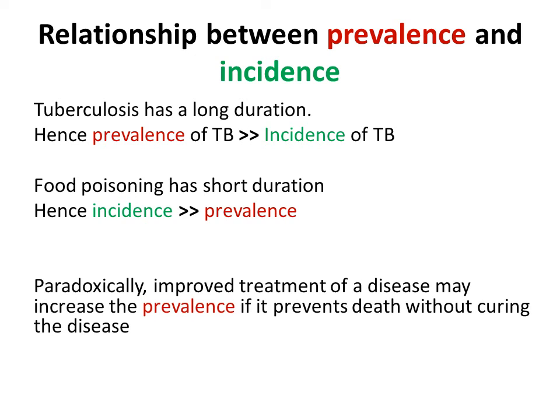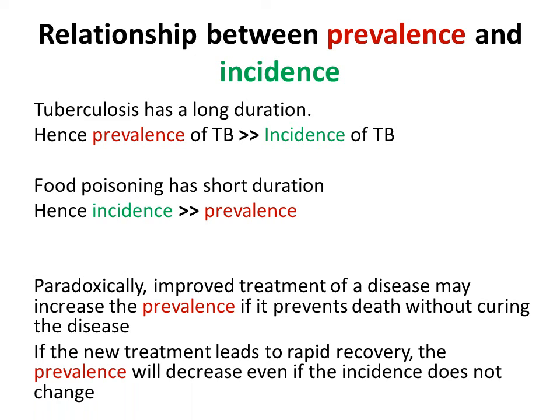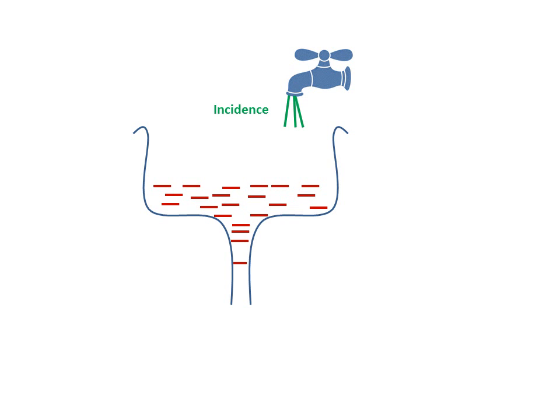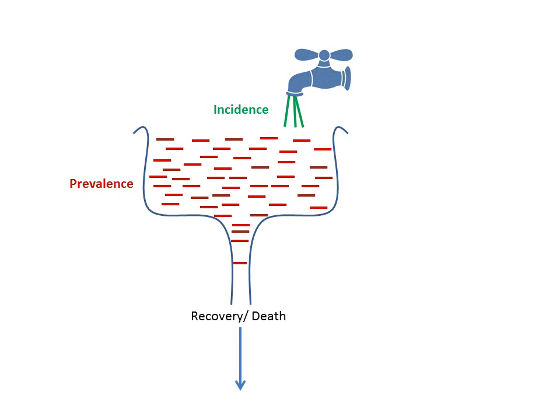If an improvement in treatment prevents death but does not cure the disease, it will paradoxically increase prevalence. But if new treatment leads to rapid recovery, prevalence will decrease even if incidence does not change. This relationship is explained by the famous example of a tap and a sink: the water the tap adds represents incidence, the drainage represents the end of illness by recovery or death, and the balance between the two determines the prevalence of the disease in the population.